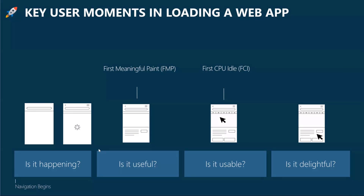We primarily rely on two metrics. There are other supplementary metrics we also track, but we're currently focusing on two. The first is called First Meaningful Paint, which measures how fast we can paint the most relevant content on the screen. The second measures page interactivity, which we call First CPU Idle, or FCI for short. You can think of it as analogous to Time to Interactive — it measures how quickly our web pages become interactive and respond to user input. Our two goals are to reduce time to First Meaningful Paint and minimize the gap between First Meaningful Paint and First CPU Idle, ensuring content is interactive as soon as the user can see it.